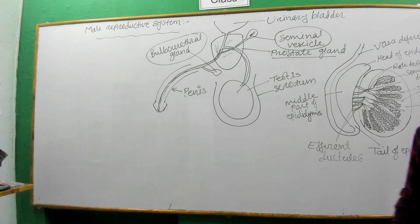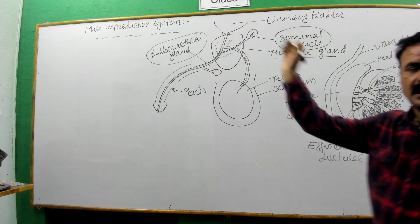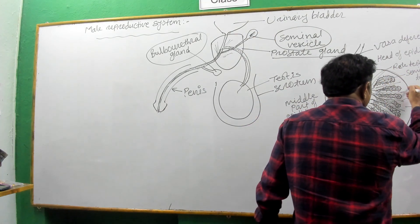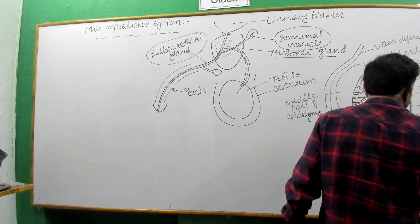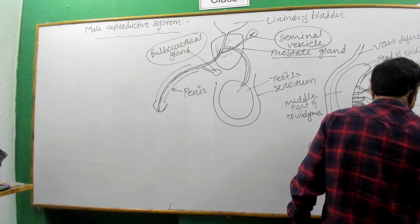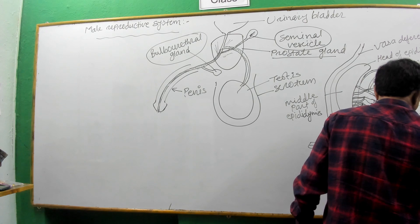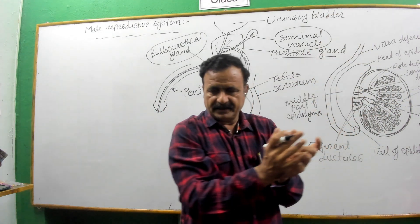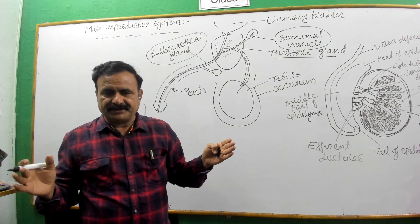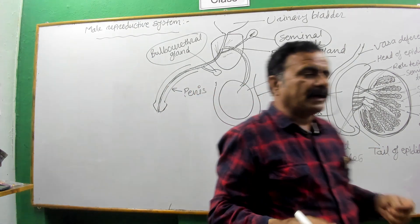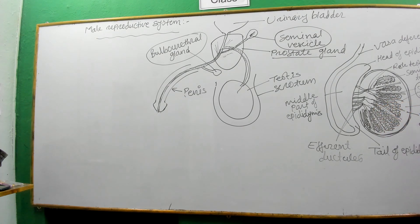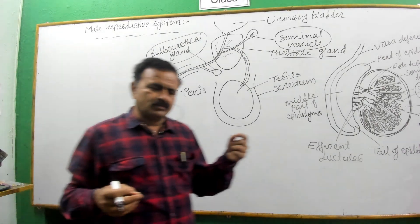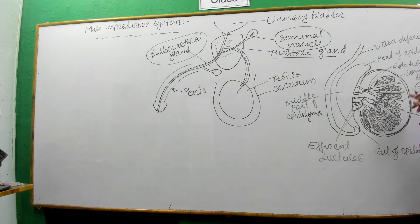The testes are composed of various internal parts. There is a layer called the tunica albuginea present inside the skin. Inside that layer, compartments are present. The walls of these compartments are called septa, and inside the septa a network of very thin, small-sized vessels is present, called the seminiferous tubules.